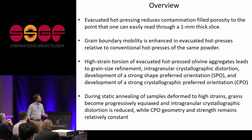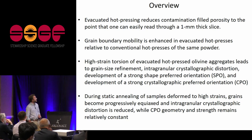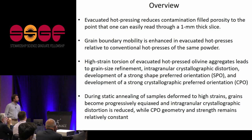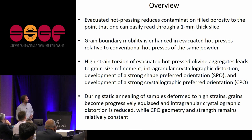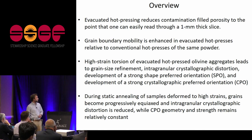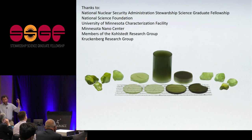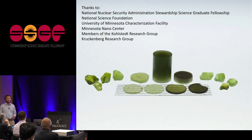In summary: evacuated hot pressing reduces porosity to the point that you can read through a millimeter-thick slice; grain boundary mobility is enhanced relative to conventional hot presses; high-strain torsion leads to grain size refinement, intra-granular crystallographic distortion, and development of strong shape preferred orientation and strong CPO; and static annealing causes grains to progressively become equiaxed, intra-granular distortion is reduced, while CPO geometry and strength remain relatively constant. Thanks to the fellowship, our funding sources, and collaborators.